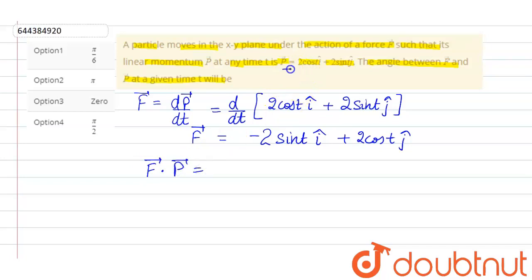Momentum is given here in the question and force we have found out. So we simply do the dot product: minus 2 sin t i cap plus 2 cos t j cap dot product with 2 cos t i cap plus 2 sin t j cap.